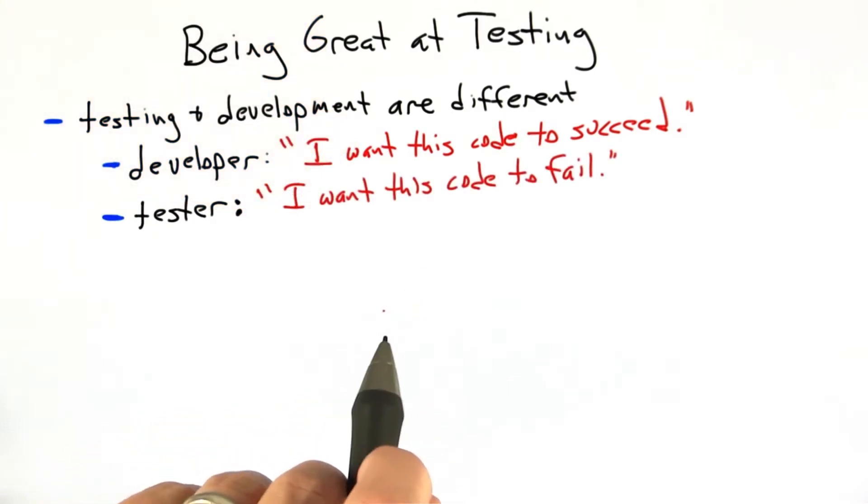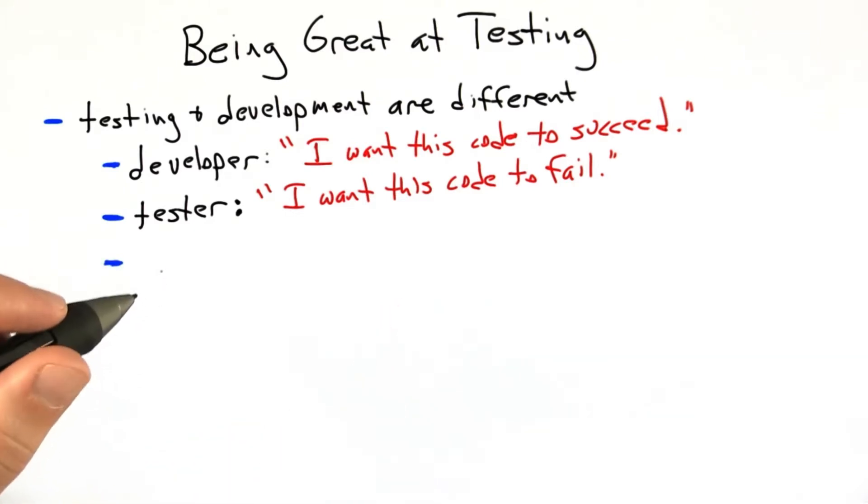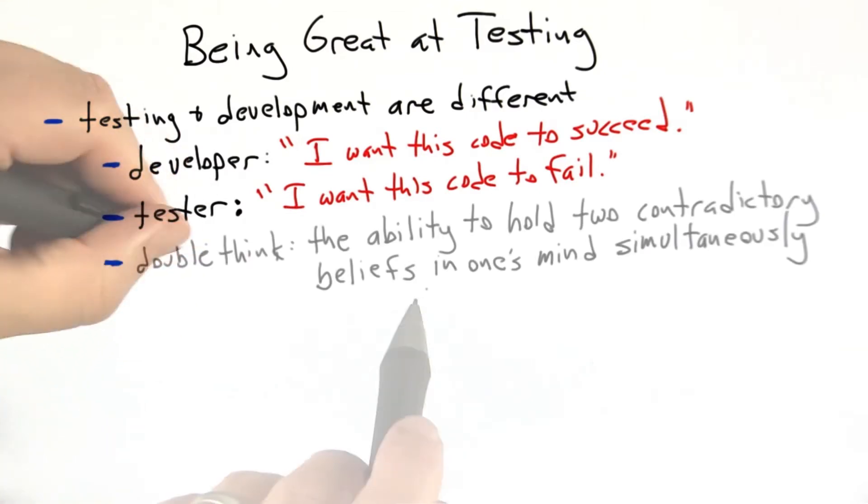The reason the tester wants the code to fail is that the tester's end goal is creating stronger code which later on doesn't fail. If we look at these requirements, we can see that for the same person to be a great tester and a great developer, there might be a bit of double-think involved.